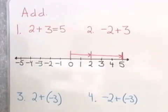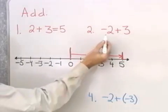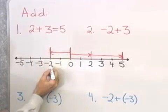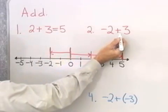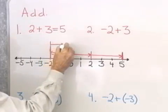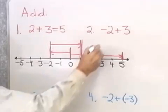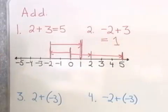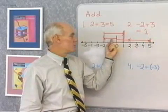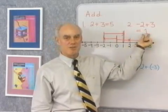We can use the same idea to add negative 2 and 3 on the number line. I always start at the origin at 0, and I move 2 units in the negative direction. I start here and move 1, 2 units in the negative direction. Then, I want to move 3 units in the positive direction — 1, 2, 3 units in the positive direction. The place where I end up is the answer to this problem, which is positive 1. So, negative 2 plus 3 is positive 1 because of this movement on the number line.